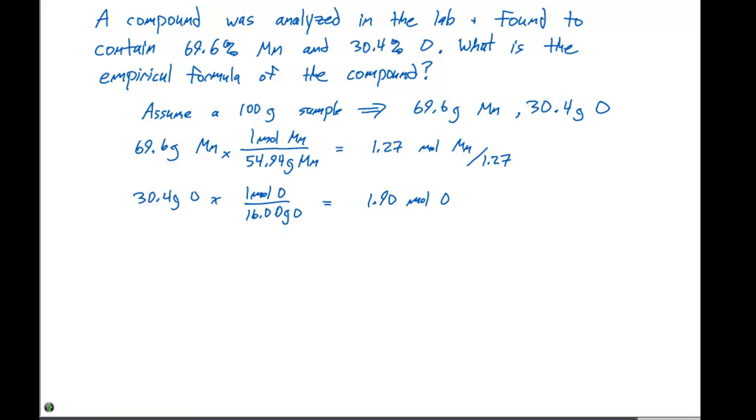We're going to divide both of these numbers by 1.27. That gives 1.00 moles of manganese, and that's going to give 1.496 in terms of the moles of oxygen.